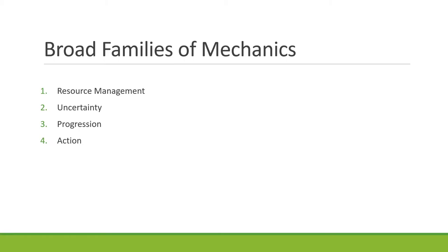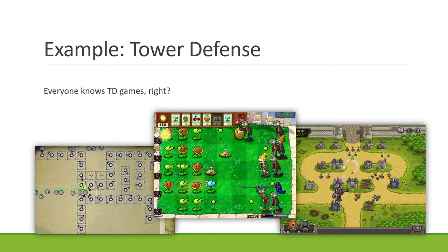Going back to mechanics: there are many, many different mechanics across various games and genres, and a lot are genre specific. Just to give you a taste of the variety and complexity of the space, we're going to look at four broad families of mechanics that apply roughly across a large number of genres. We can drop them into four buckets: resource management mechanics, uncertainty mechanics, progression mechanics, and action mechanics. There are more, but let's look at these specifically.